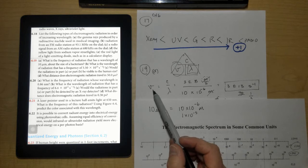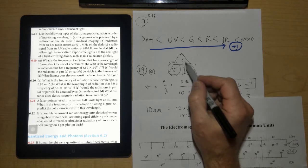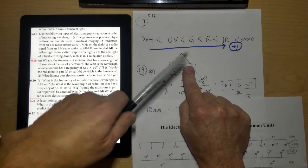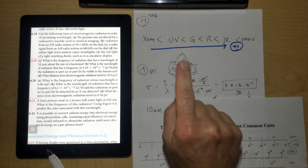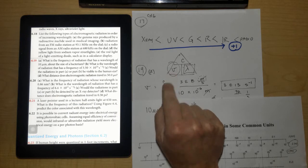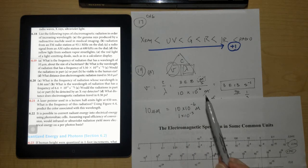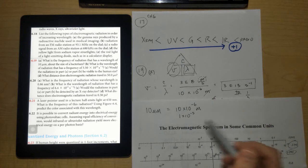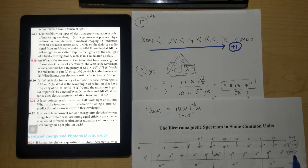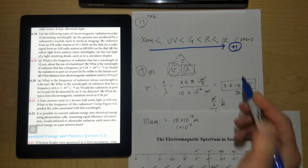Here's the math: nu equals C over lambda. C is 3 times 10 to the 8th meters per second, and lambda is 10 times 10 to the negative 6th meters. The meters cancel, and you get something times 10 to the 13th per second — the unit for hertz, which is per second or seconds to the negative 1. If you used the spectrum chart and had something times 10 to the 13th with no work, write 'used spectrum chart.' Give yourself plus 1.